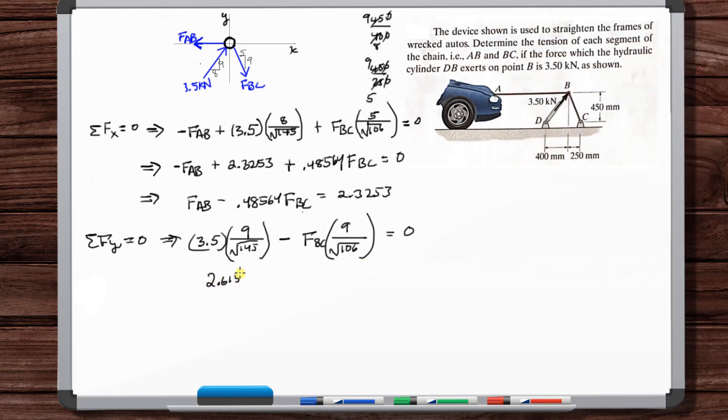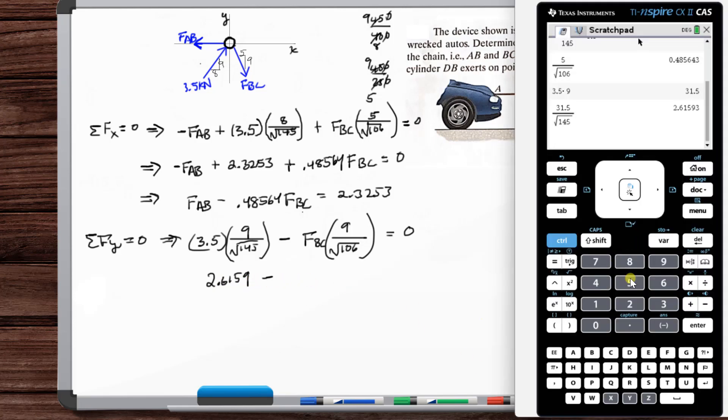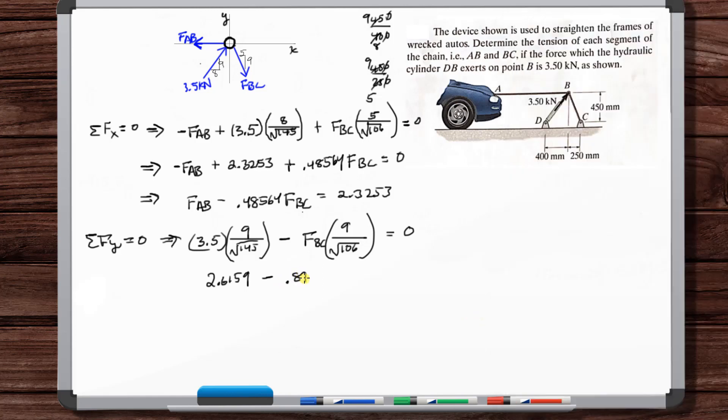So we've got 3.5 times 9 divided by square root of 145, 2.6159. So 2.6159 minus 9 divided by the square root of 106, 0.87416.